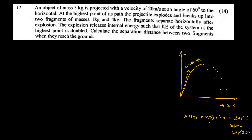The initial velocity U is in the horizontal direction at 60 degrees. We have horizontal and vertical components of velocity. The horizontal component is U cos 60 and the vertical component is U sin 60.